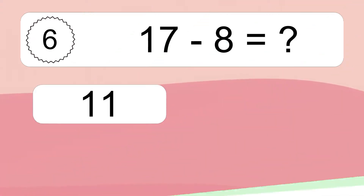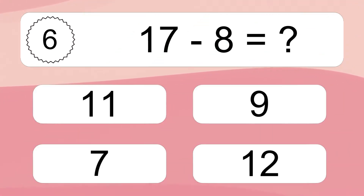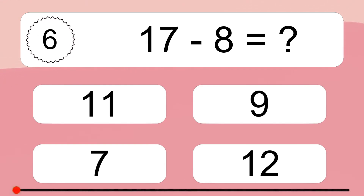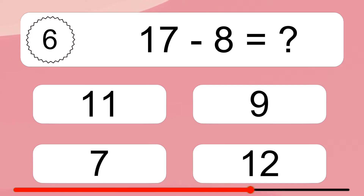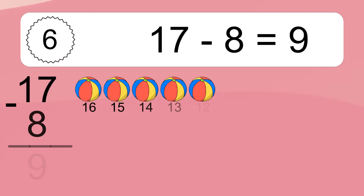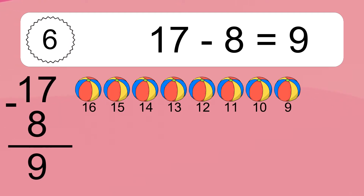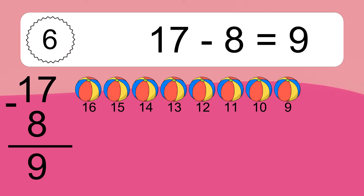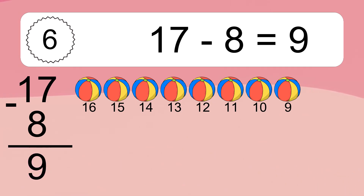17 minus 8 equals what? 17 minus 8 equals 9. Let's count it: 16, 15, 14, 13, 12, 11, 10, 9.